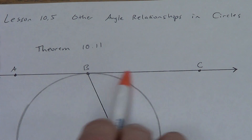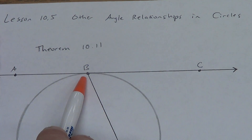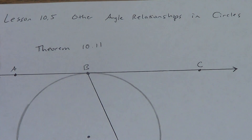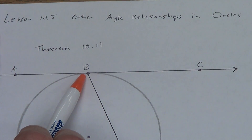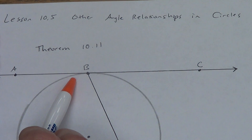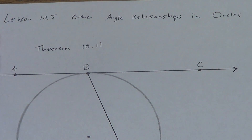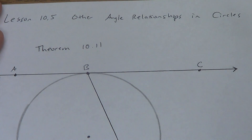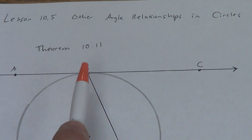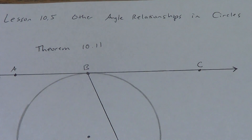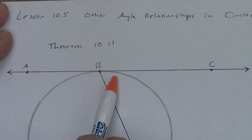Theorem 10.11 says: if a tangent — this is a tangent, and point B is the point of tangency — if a tangent and a chord intersect at a point on a circle, then the measure of each angle is one-half the measure of its intercepted arc. This is not a difficult theorem to understand or prove. What do we know about these two angles?